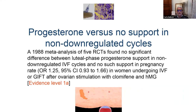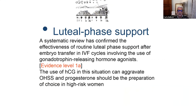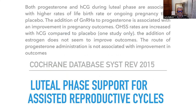We arrived at the clinical effect: progesterone versus no support in down-regulated cycles is demonstrated to be highly effective. In luteal phase support, the use of hCG can aggravate OHSS, and progesterone should be the preparation of choice in high-risk women. The support of luteal phase should be done by progesterone mostly. Both progesterone and hCG during luteal phase are associated with higher pregnancy rate, live birth rate, or ongoing pregnancy than placebo.